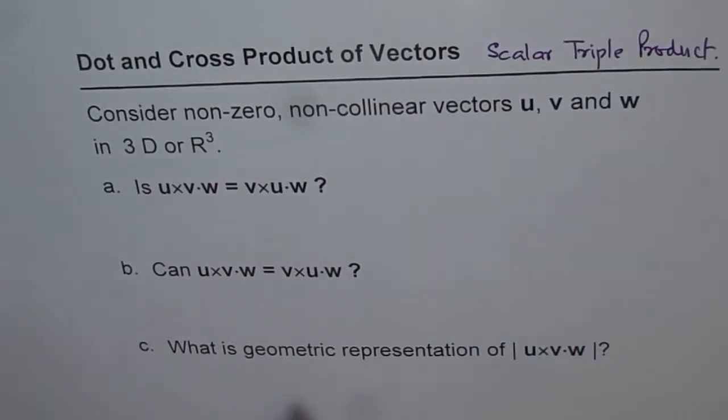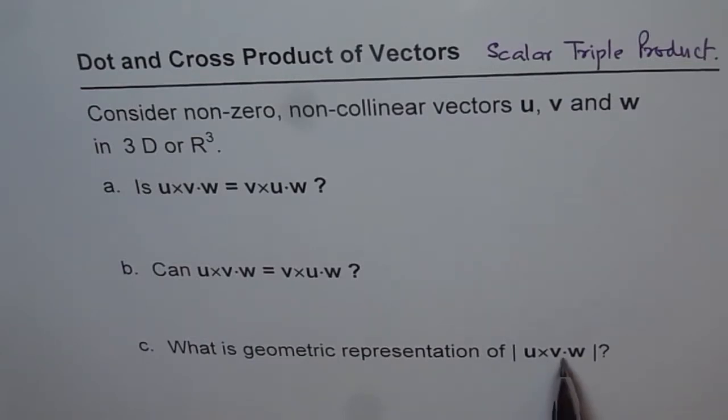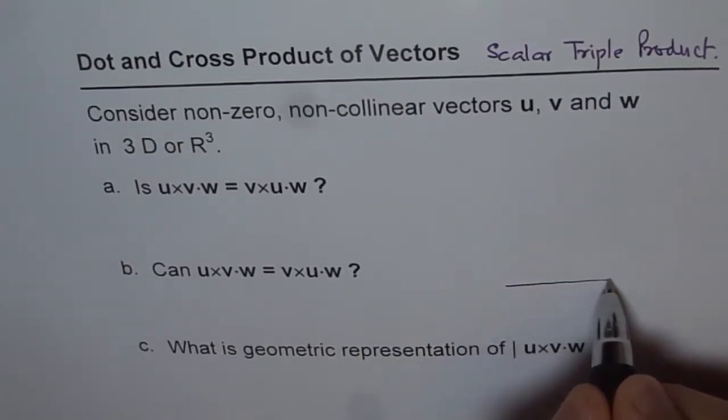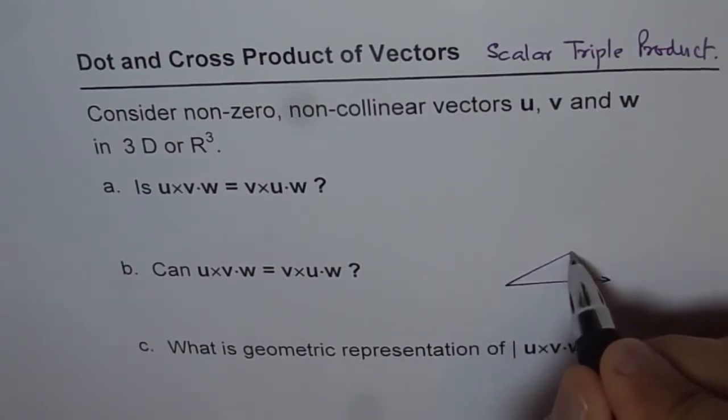Now, I will answer from part C, so that you have very clear understanding of what we are getting into. What is geometric representation of u cross v times w? Think it like this, that we have two vectors u and v. Let's say this is u, and let's say this is vector v.